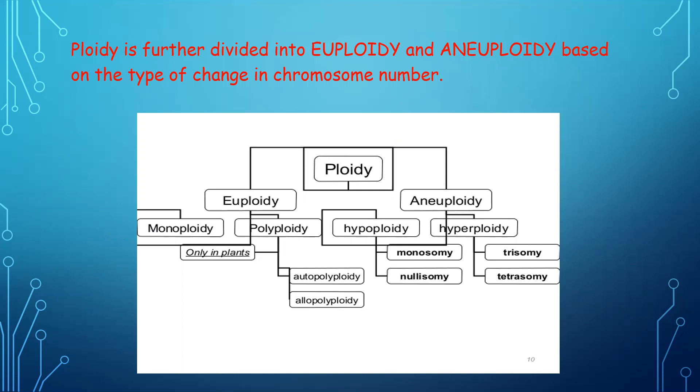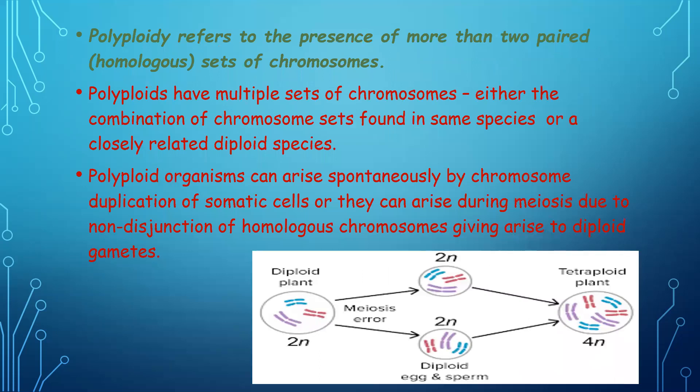Aneuploidy is further divided into hyperploidy and hypoploidy. Polyploidy refers to the presence of more than two paired sets of chromosomes. These multiple sets can be either a combination of chromosomes of the same species, called autopolyploidy, or from a closely related diploid species of the same genus, called allopolyploidy. There are two types of polyploidy.